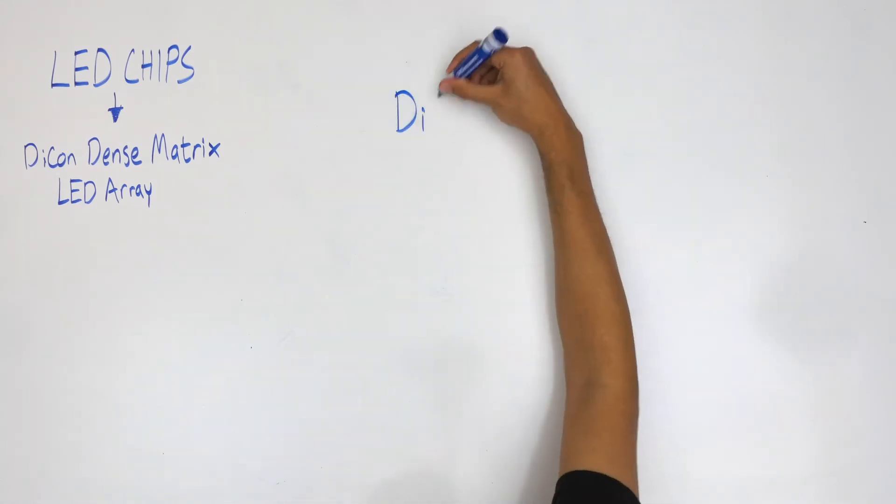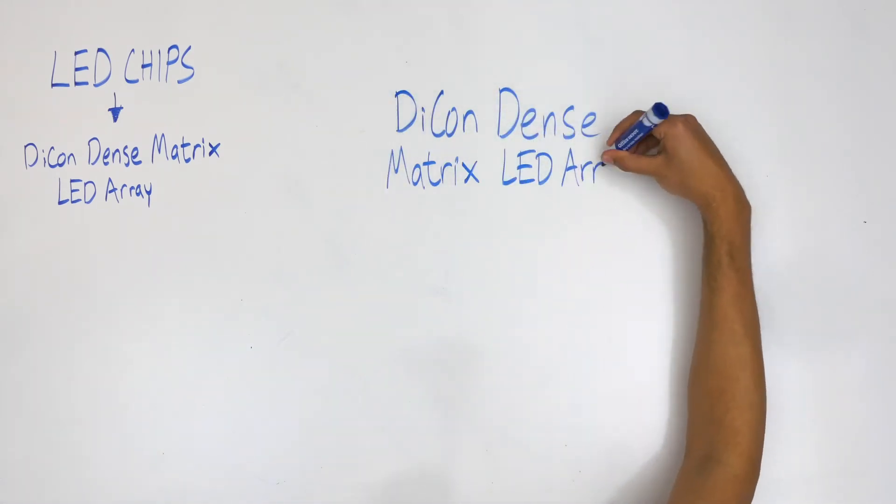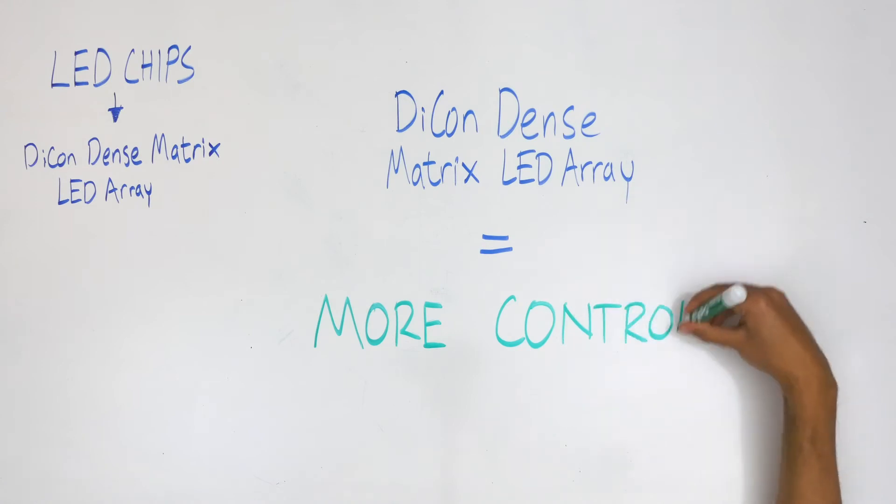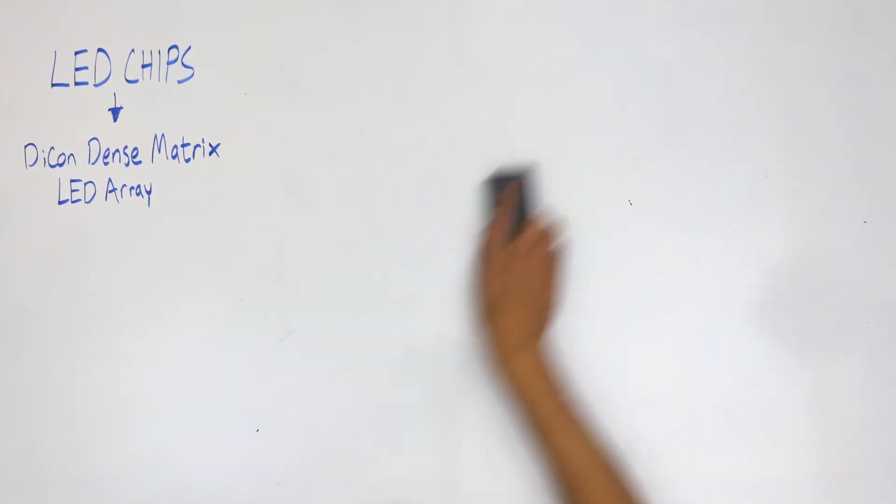Simply put, the Dense Matrix LED array offers more control over the emitted light than ever before. As you'll see shortly, more control means better results. If you want to learn more about Daikon's Dense Matrix LED array, please refer to the Dense Matrix array video.